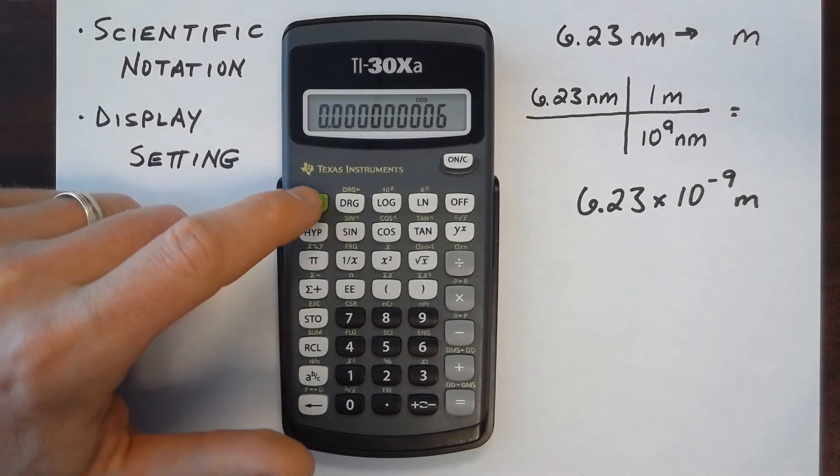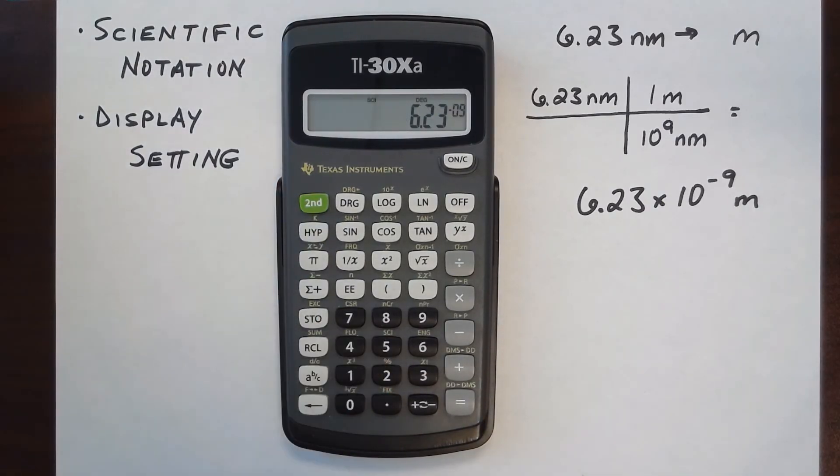So if I hit 2nd scientific, it sets the display setting to scientific notation, so that I get all three significant figures in the display.